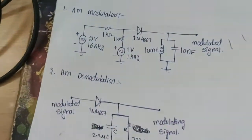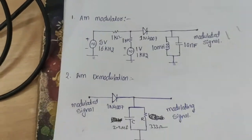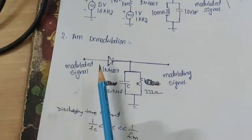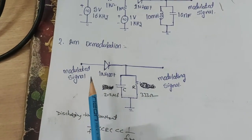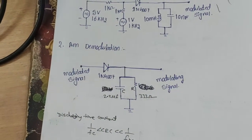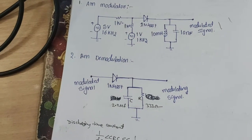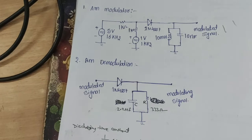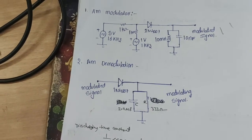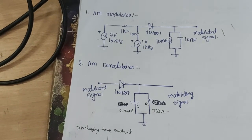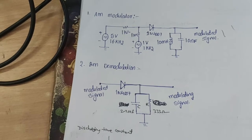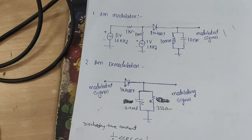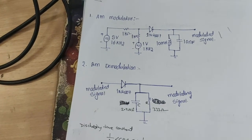Here, this is the Modulator circuit diagram and this is the Demodulator circuit diagram. What is modulation? Modulation is defined as the process of changing the characteristics of the amplitude, frequency, or phase of the carrier signal — that is, the high frequency signal — in accordance with the intensity of the message signal, that is, the modulating signal.